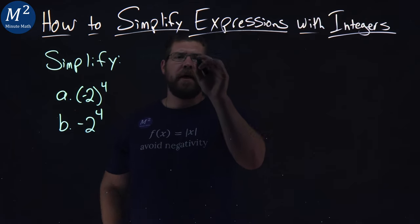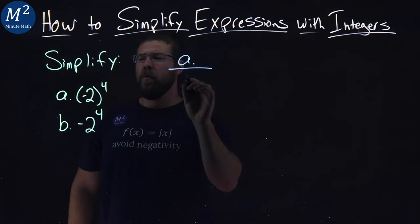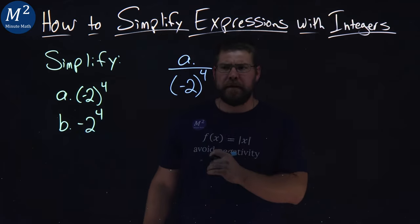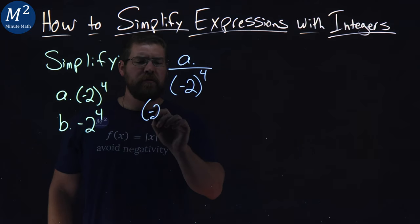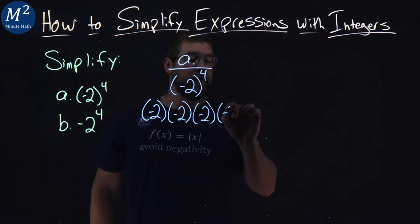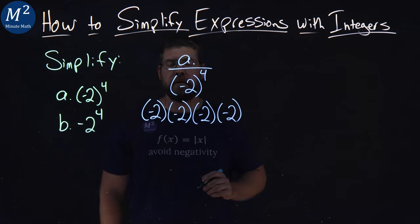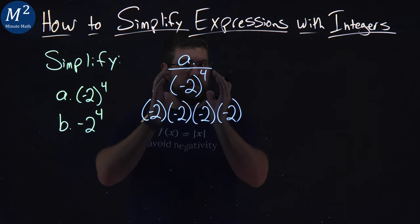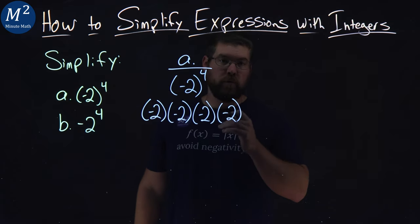Let's start with part a. We have a negative two in parentheses to the fourth power. What does that mean? Well, that's a negative two times a negative two times a negative two times a negative two. So the fourth power breaks it down to be the same value in the parentheses multiplied by itself four times.